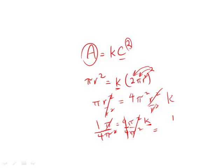Therefore, writing this a little bit more legibly, 1 over 4π is equal to k, and that is answer choice A.